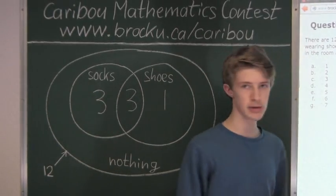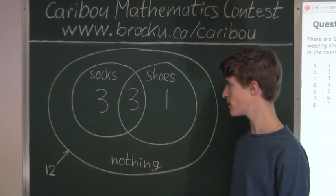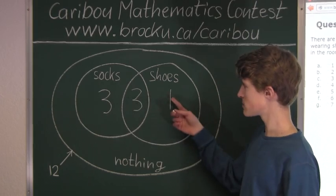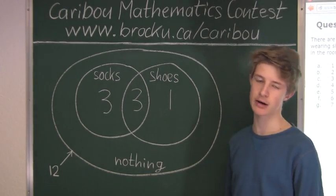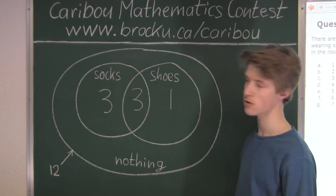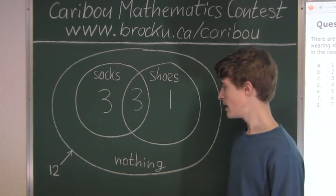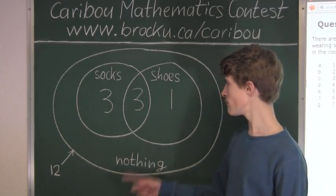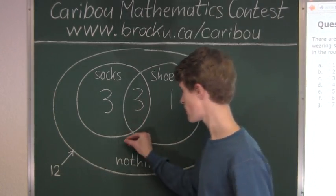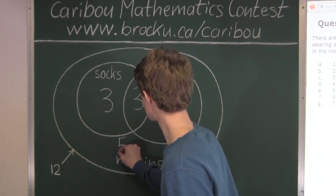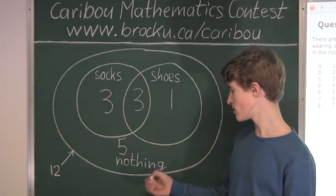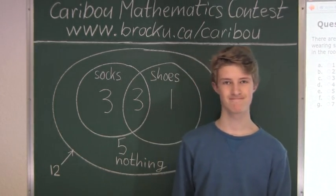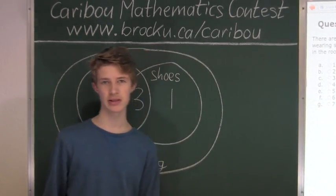Now the question is: how many people are barefoot? We have 3 wearing only socks, plus 3 wearing both socks and shoes, plus 1 wearing only shoes — that's 7 people wearing either socks or shoes. We know there are 12 people total, so 12 minus 7 equals 5. Therefore, 5 people are not wearing socks or shoes, and the answer is 5.